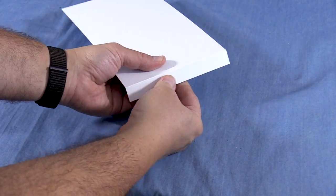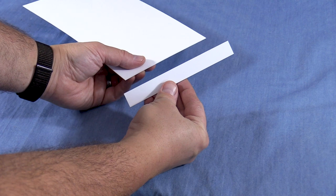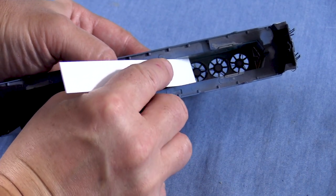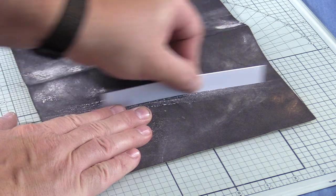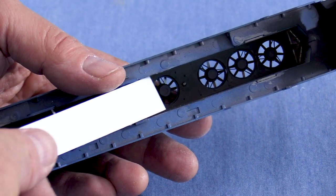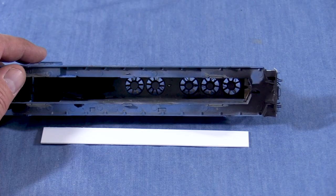After scoring the styrene with my knife a few times, I can snap it along the line. Let's check the fit. It'll go into the shell but it's a little snug. I'll put some sandpaper on my plate glass cutting surface and run the piece that I cut over it a few times. Now it fits in easily.